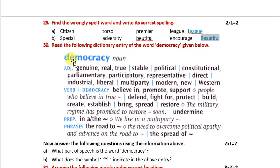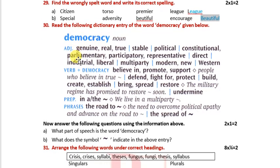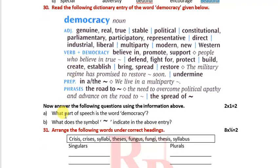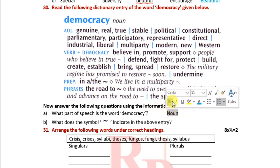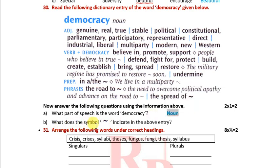Now it's time for dictionary entry. The root word is 'democracy.' What part of speech is the word 'democracy'? Democracy is a noun. What does the symbol indicate? It indicates the root word of the entry word. What is the entry word? Democracy is the entry word — so the answer is democracy.